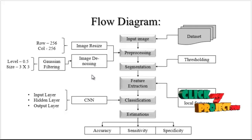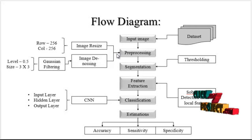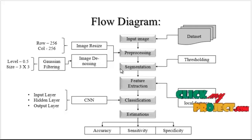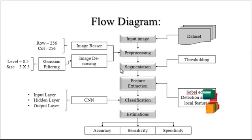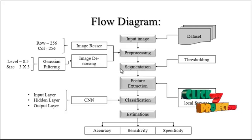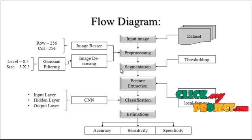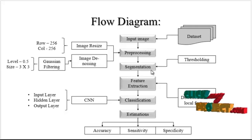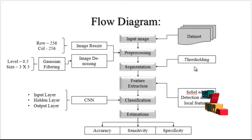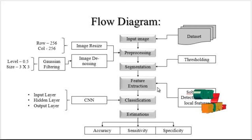After noise removal, pre-processing is completely done. We then move to the third stage: segmentation. In segmentation, we extract the bone portion separately, because in X-ray images both the bone and the background are present. We have to eliminate the background region and extract the foreground region. For this we use threshold-based segmentation to extract the bone region. After extracting the bone region, we move to the fourth stage: feature extraction.